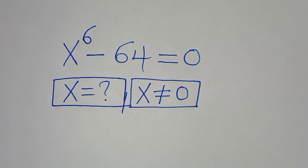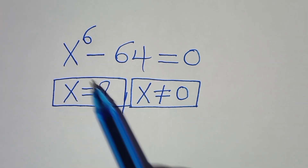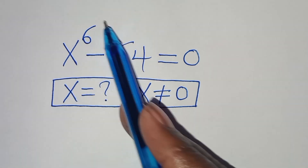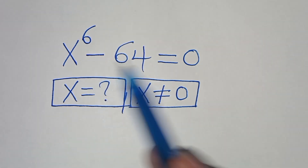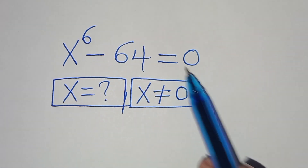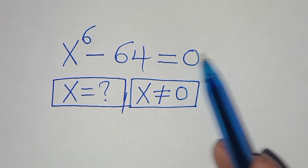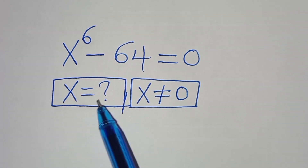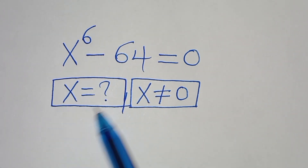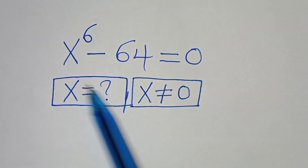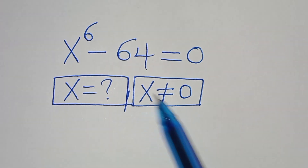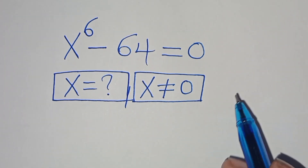Hello everyone, you're welcome to solve this nice algebra problem which is x to the power of 6 minus 64 equals 0. What are the values of x, given that x is not equal to 0?